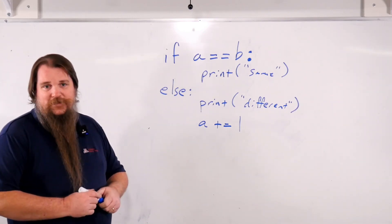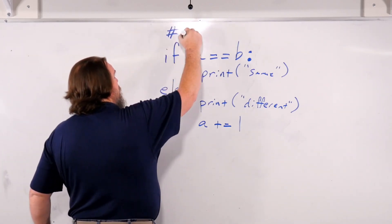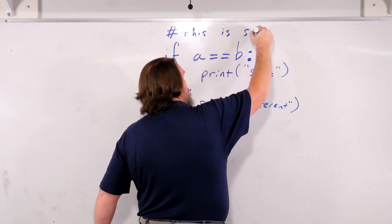How do you write a comment in Python? You're just going to start it with the hash character. This is simple.